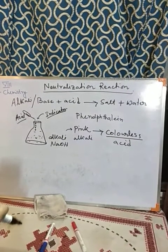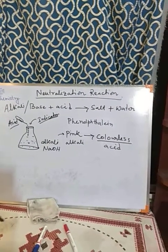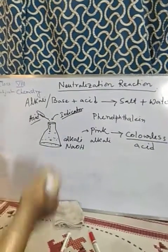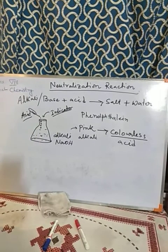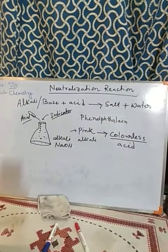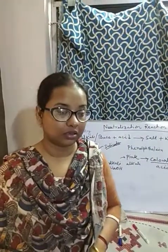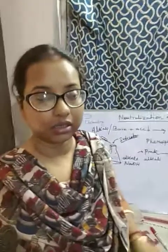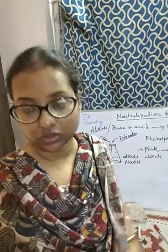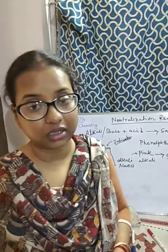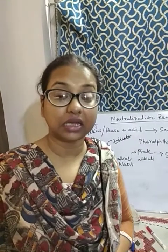When the color changes to colorless, it means the amount of alkali and acid is equal and neutralization has occurred. This is the neutralization point. In this manner we can carry out the neutralization reaction with any alkali and any acid. We are going to learn three indicators: phenolphthalein, methyl orange, and litmus.